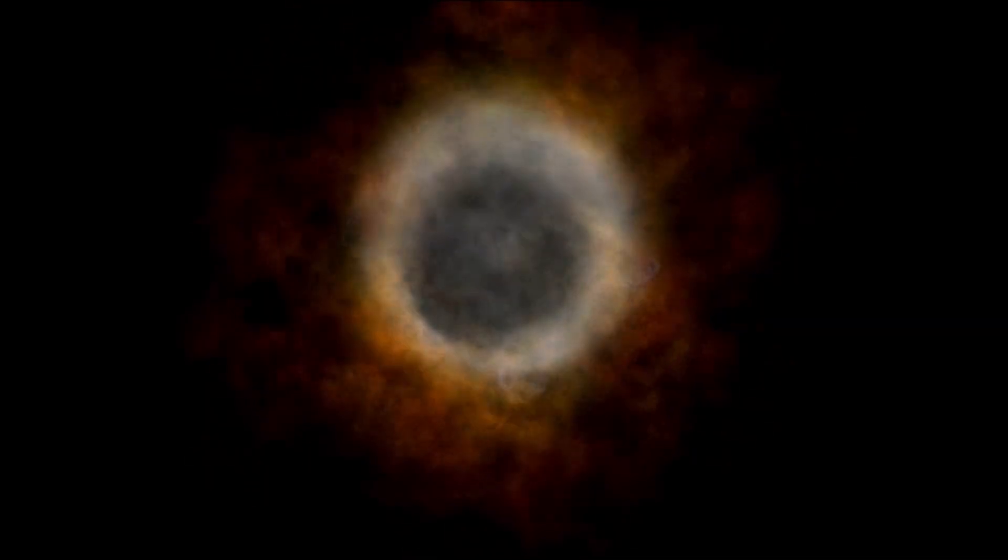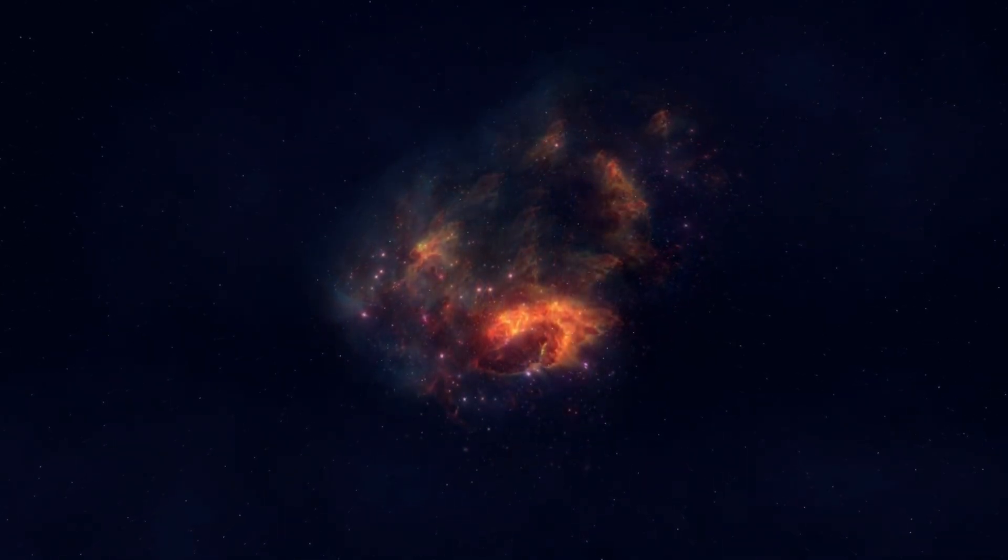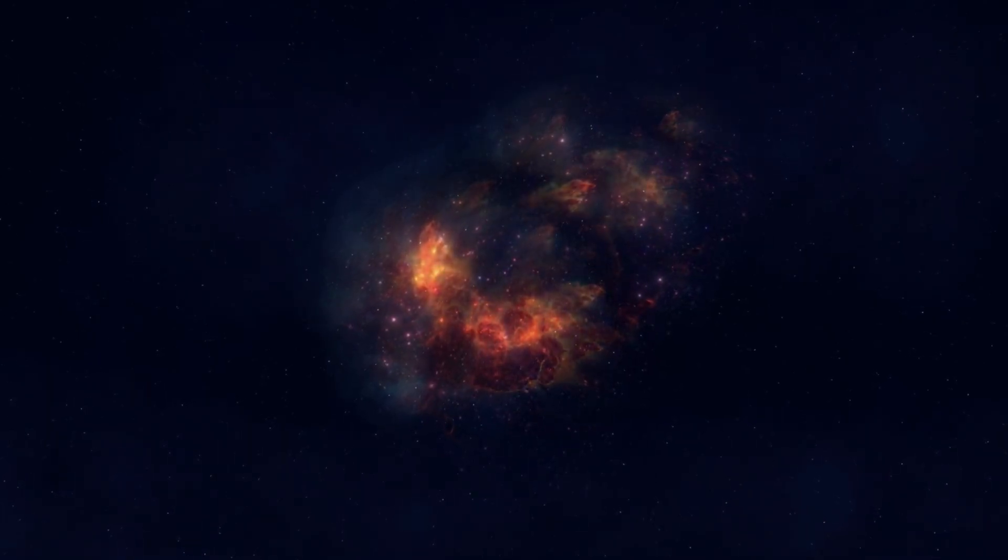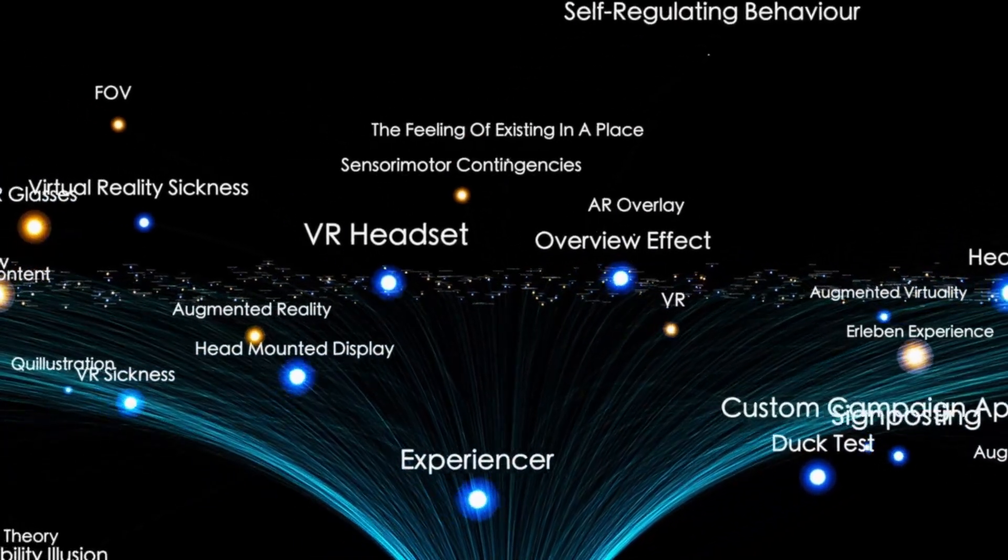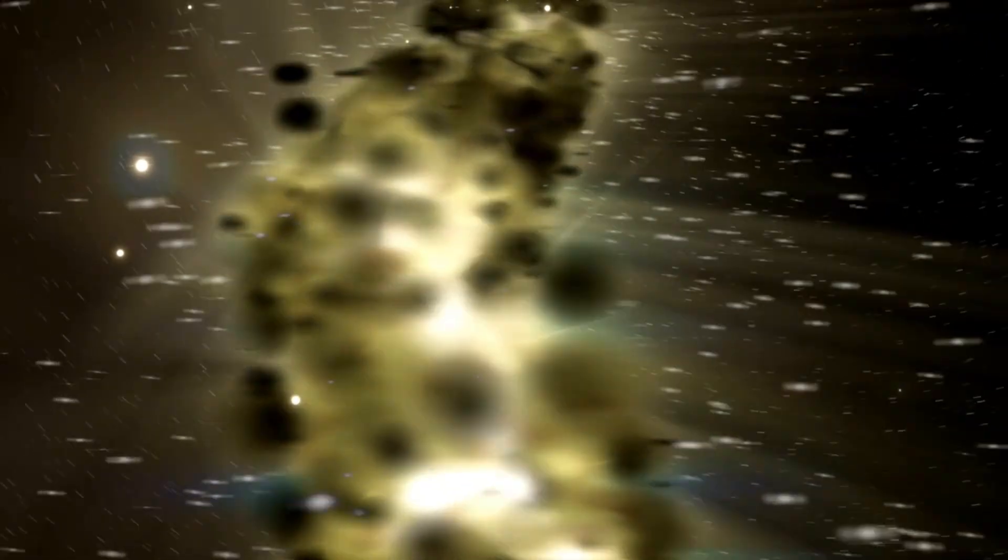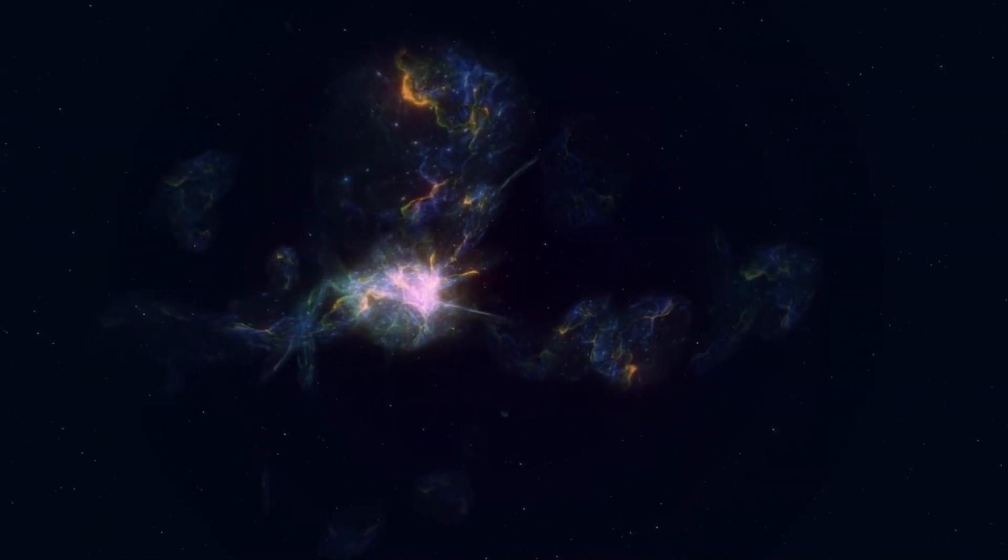One particularly important internal process that occurs inside stars like Betelgeuse is known as stellar convection. In this process, energy generated in the core moves toward the surface, helping to balance internal processes with the star's external brightness. As hot matter in the core rises and cooler matter descends, convection currents form that transport energy to the outer layers. This movement of matter alters the luminosity of the star, making it appear brighter when the energy reaches the surface. These changes in energy flow caused by convection currents are directly responsible for the variations in brightness that we observe as pulsations.